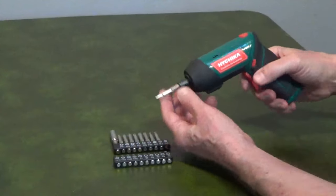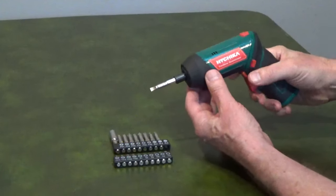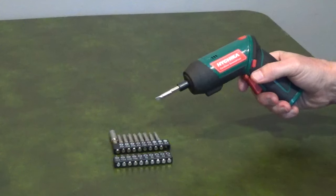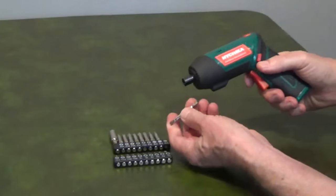The magnetic chuck rotates clockwise and counterclockwise and locks in place when the trigger is released so it can be used as a manual screwdriver.